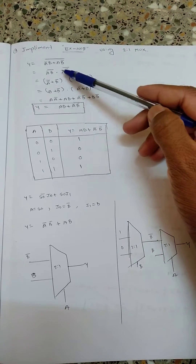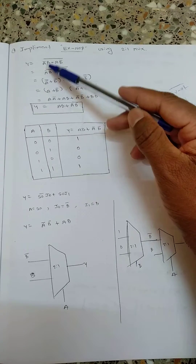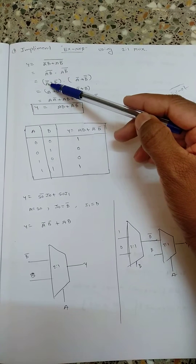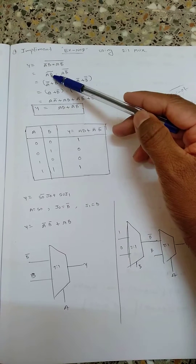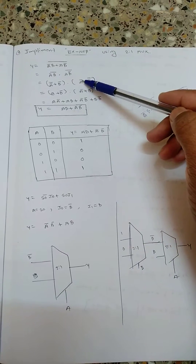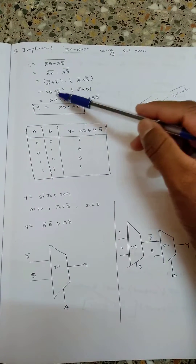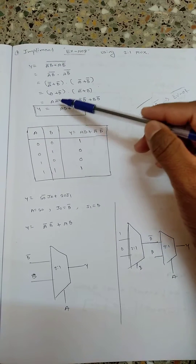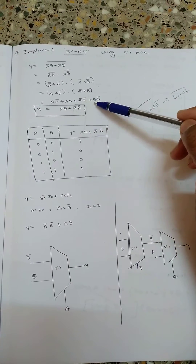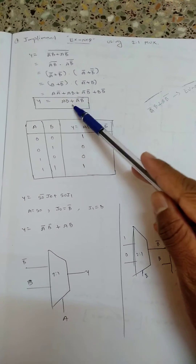Using De Morgan's theorem I split the terms: the complement of (A_bar·B) becomes (A_bar + B_bar), and 'plus' becomes 'into'. Similarly, the second term A·B_bar becomes (A_double_bar + B) which is (A + B_bar). Multiplying both terms: A·B + A·B_bar·A_bar + A_bar·B·B_bar, where B·B_bar = 0 and A·A_bar = 0.